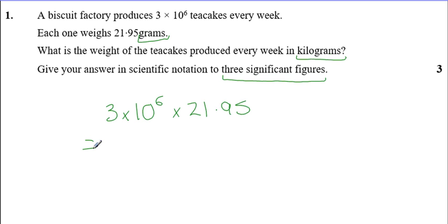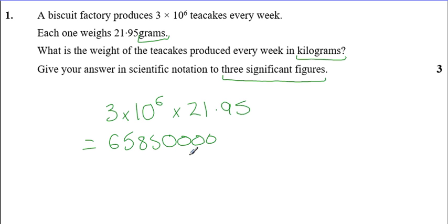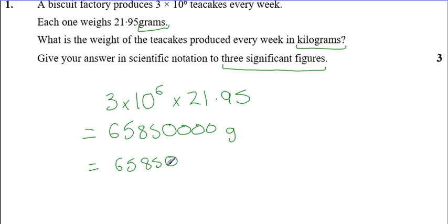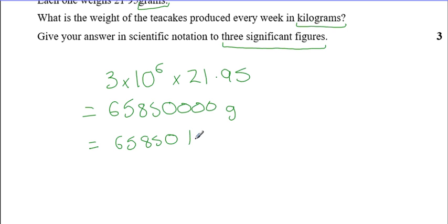In the calculator, 3×10¹²·⁶ multiplied by 21.95 gives you 6,585 and then four zeros. Now that's in grams and we want it in kilograms, so we'll need to divide by 1,000 because there are 1,000 grams in a kilogram. So it's going to be 6,585 and then five zeros. Now we need to do the last step: scientific notation to three significant figures.